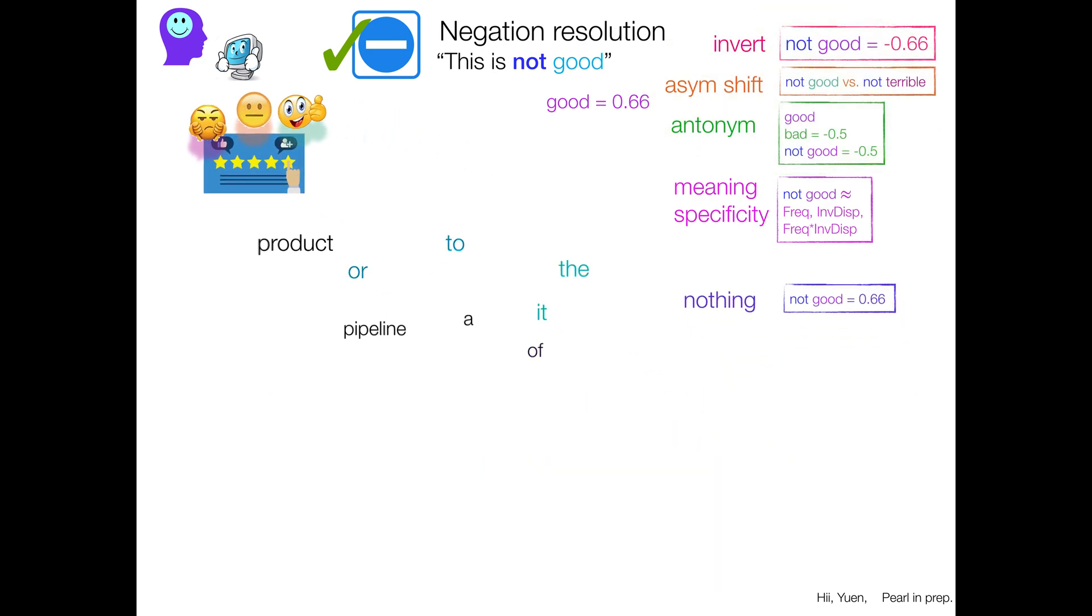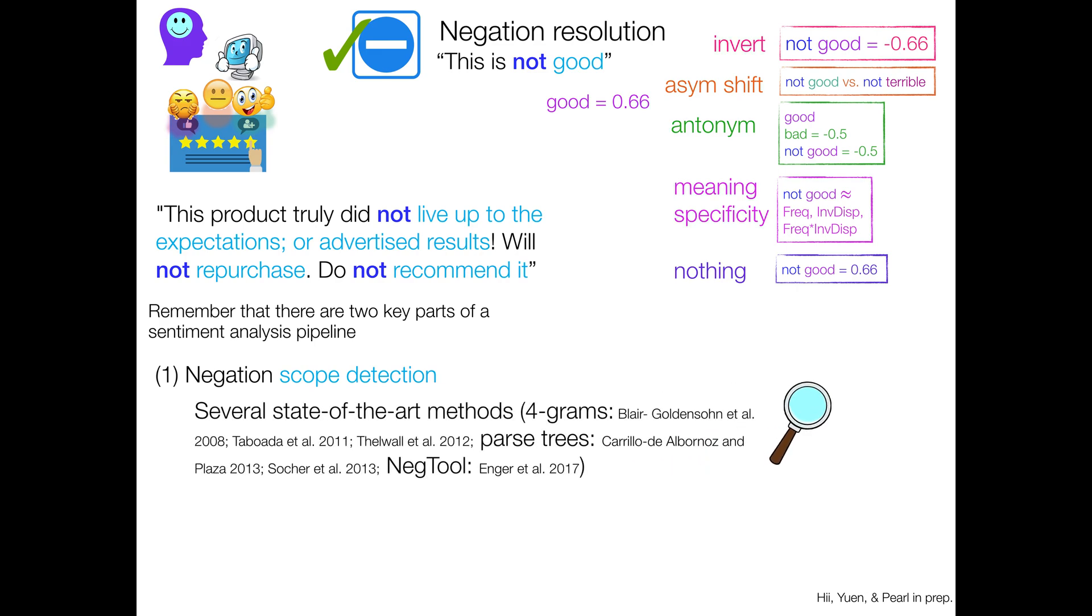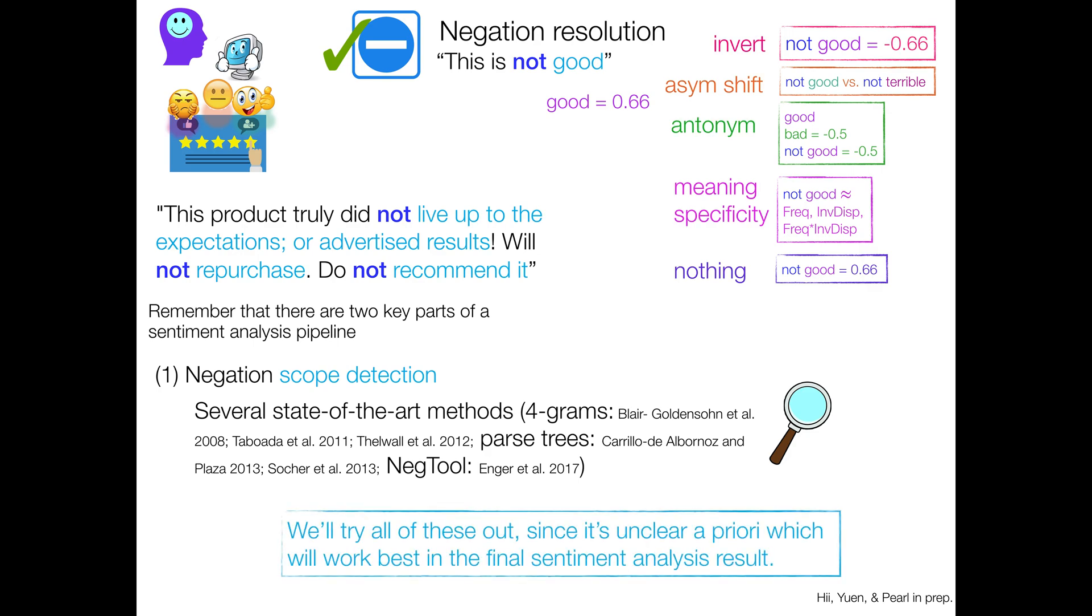And so remember then that there are two key parts of a sentiment analysis pipeline. The first is to detect the scope of negation, like what needs to be resolved. That's all the stuff in the blue. And as I said, there are several state-of-the-art methods for doing this. Foregrams, parse trees, a machine learning tool that was tuned to this sort of thing. And since we don't know a priori which will work best, we're going to just try them all out in combination with our different resolution methods.